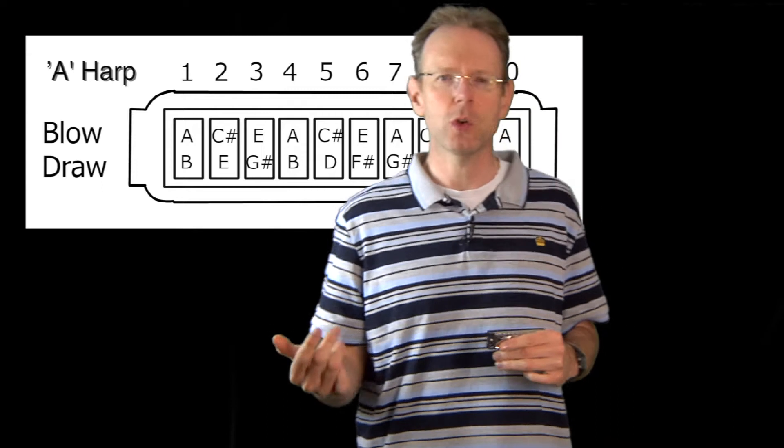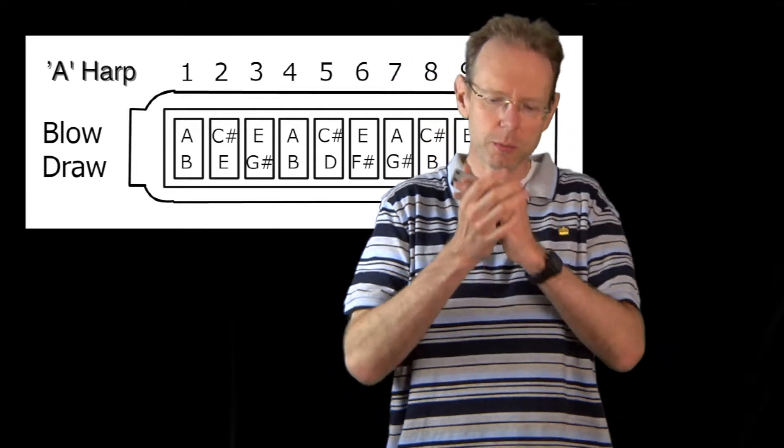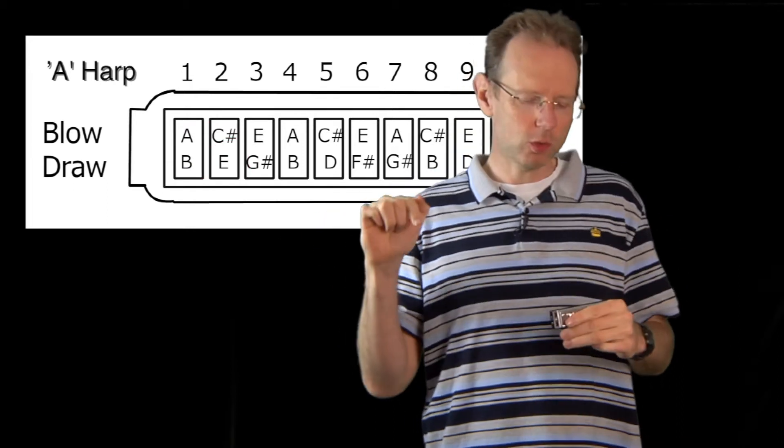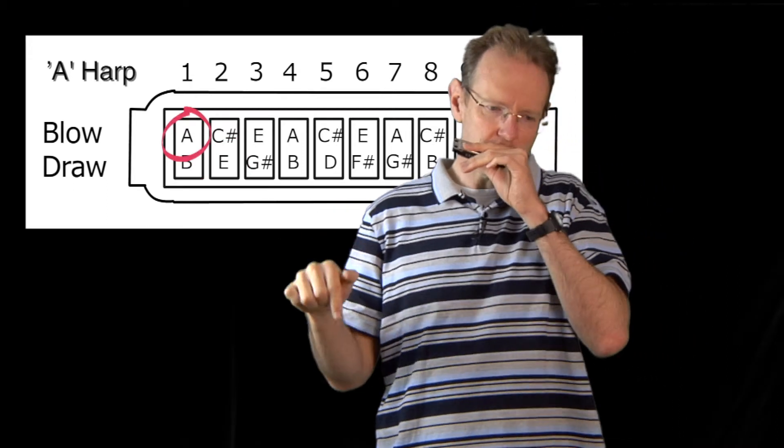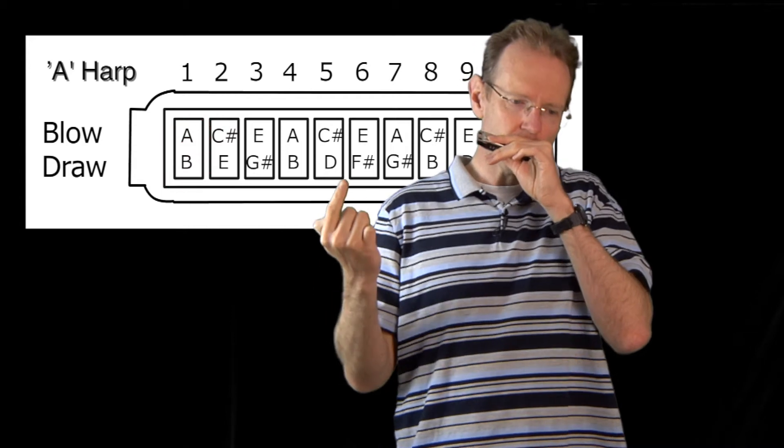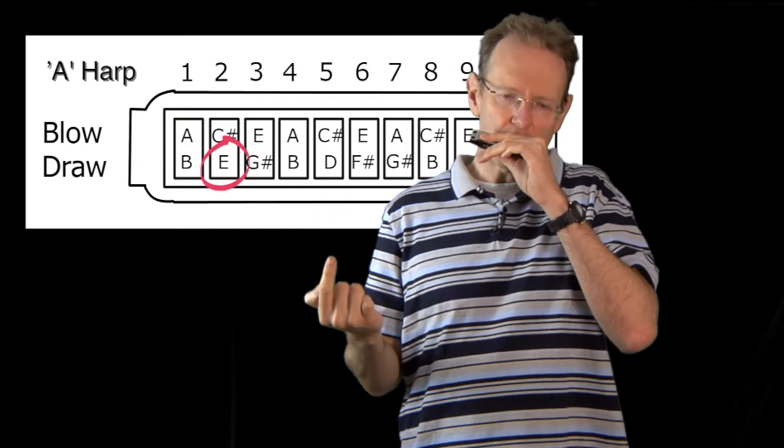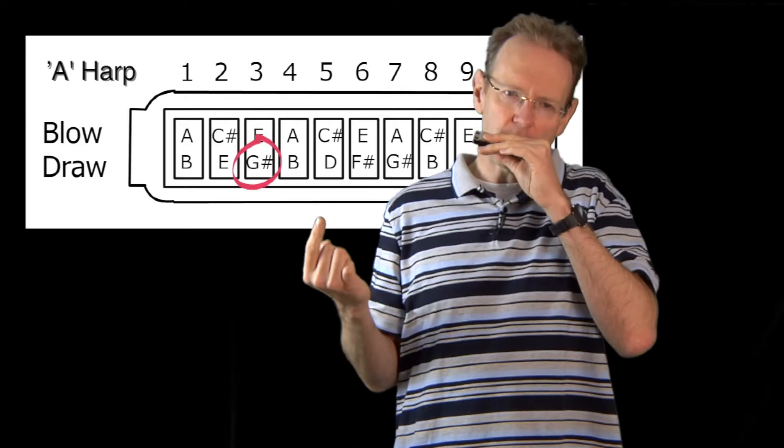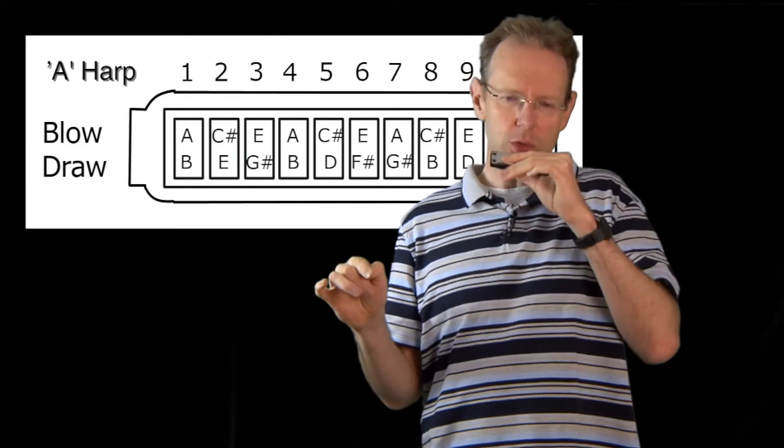And that's just a simple chord. You're just playing along with the chord basically. So you're blowing on the first hole. Drawing on the first hole. Drawing on the third hole. Drawing on the second hole. Drawing on the third hole. Blow on the fourth hole.